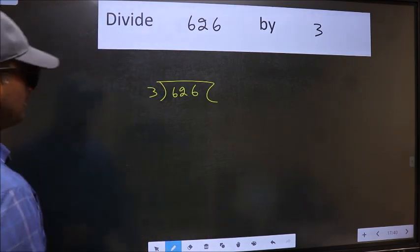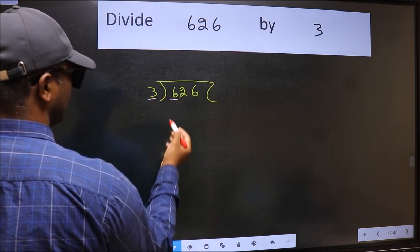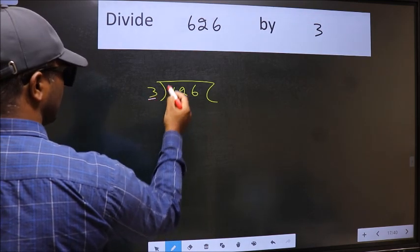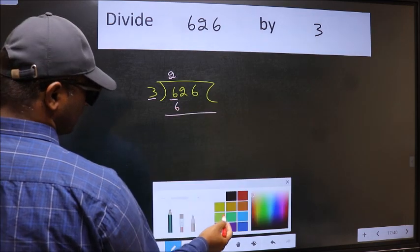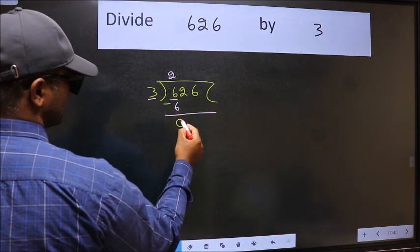Next, here we have 6 and here 3. When do we get 6 in the 3 table? 3 times 2 is 6. Now we should subtract. We get 0.